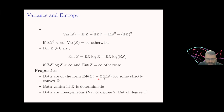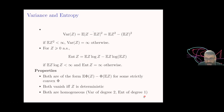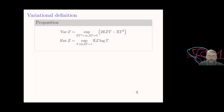One can consider general functionals of this type — these are called the φ-Sobolev inequalities or φ-entropies. For them to be useful probabilistically, it's not enough to assume that φ is convex; you need some additional assumptions. In such generality these functionals will not be homogeneous, whereas these two are homogeneous. Variance is clearly homogeneous of degree two, and entropy, using the properties of the logarithm, one can see that there are cancellations and it is in fact homogeneous of degree one.